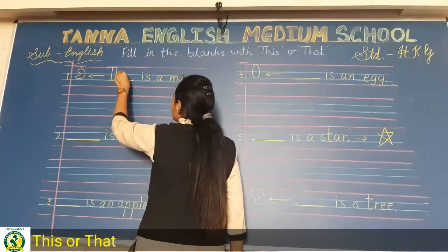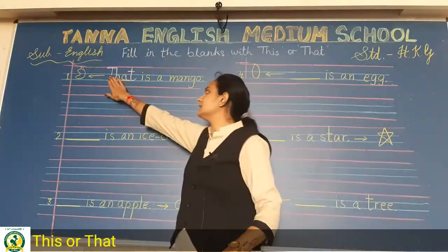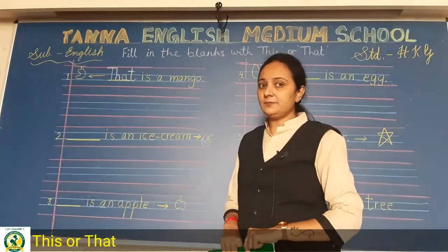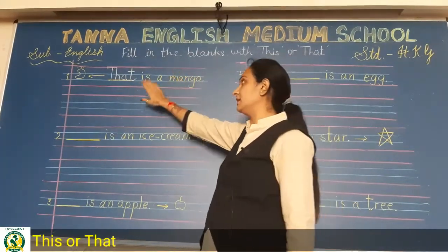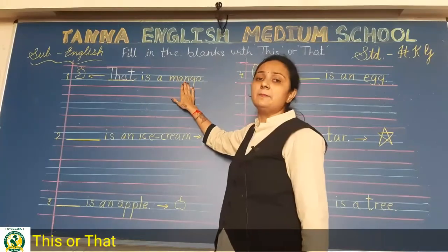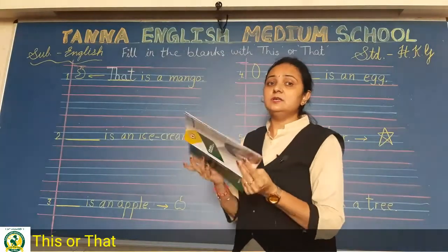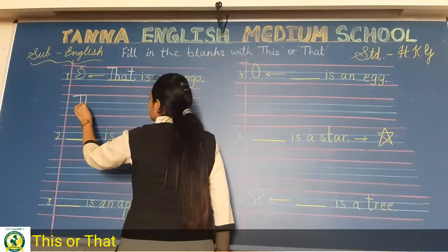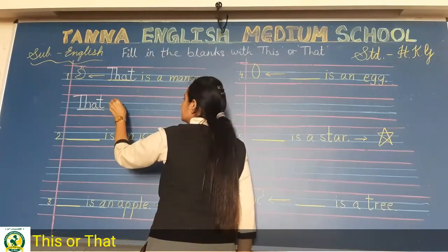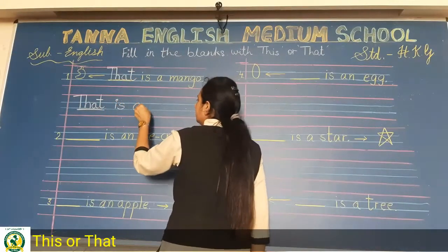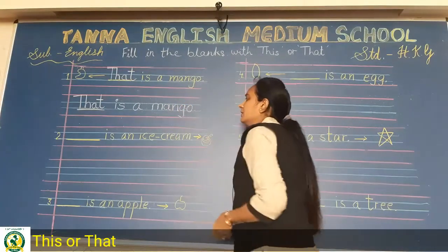So you have to write 'That is a mango.' There is a line below where you write the whole sentence. Spell it out: T-H-A-T, that. Then 'is', then 'a', then 'mango'. Write the spelling of mango. This is how you have to complete the whole page.